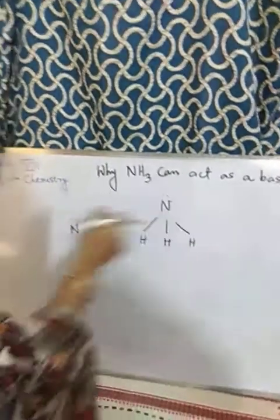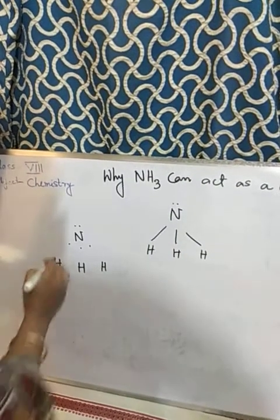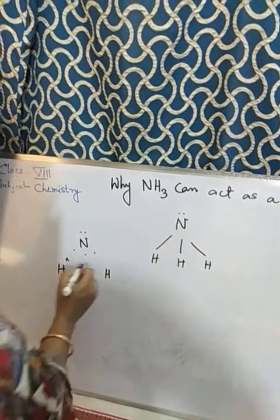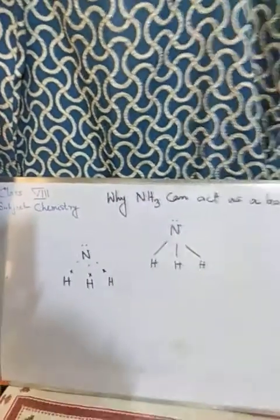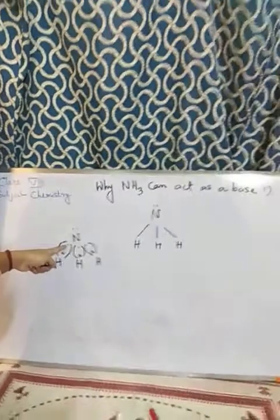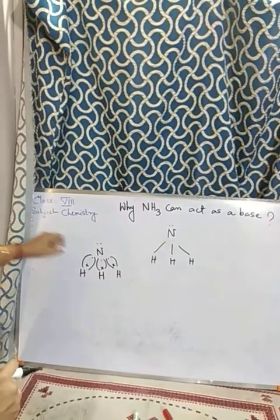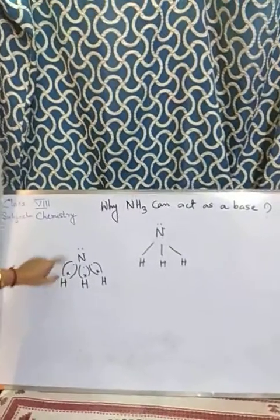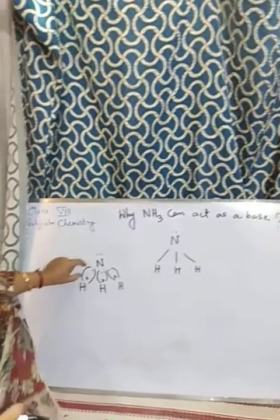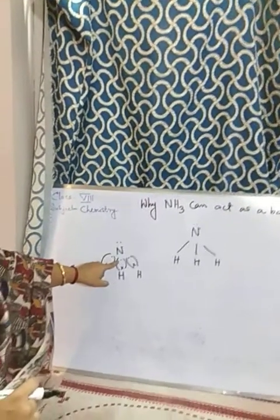There are three hydrogens in ammonia. We will represent the hydrogen's electron as a cross. In this manner we can represent the formation of bonds in a covalent compound. Two electrons will be shared together — one electron given by nitrogen and another by hydrogen — so they will share these two electrons together and form a bond.